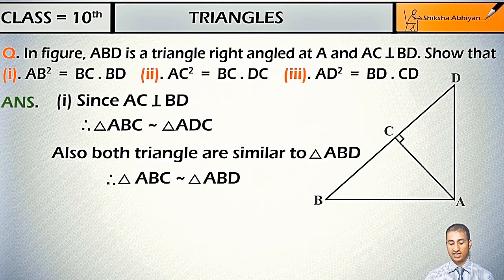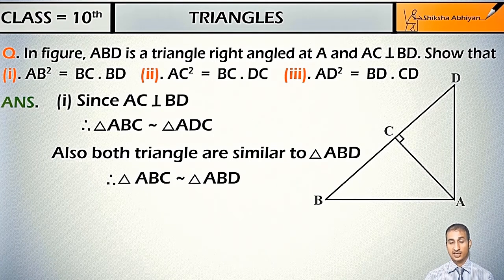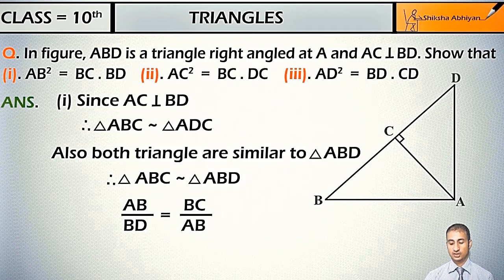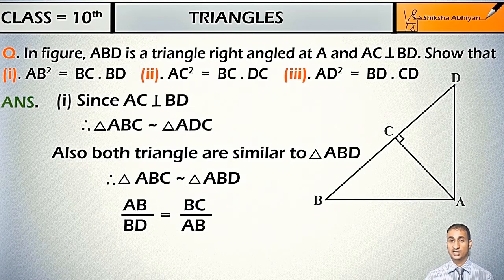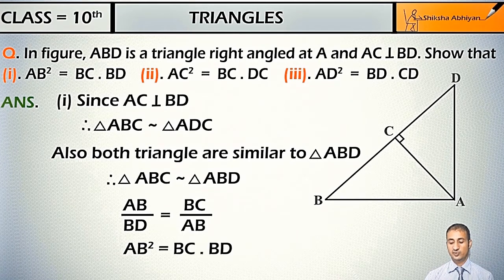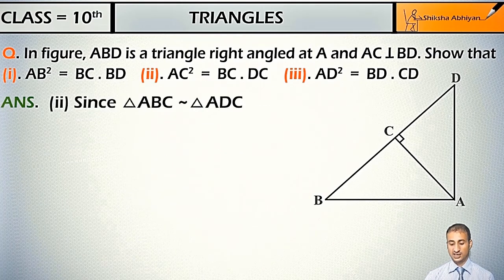Therefore triangle ABC is similar to triangle ABD, so I can write AB upon BD is equal to BC upon AB. So cross multiply, student, and we get AB² = BC·BD. Now for the second part...